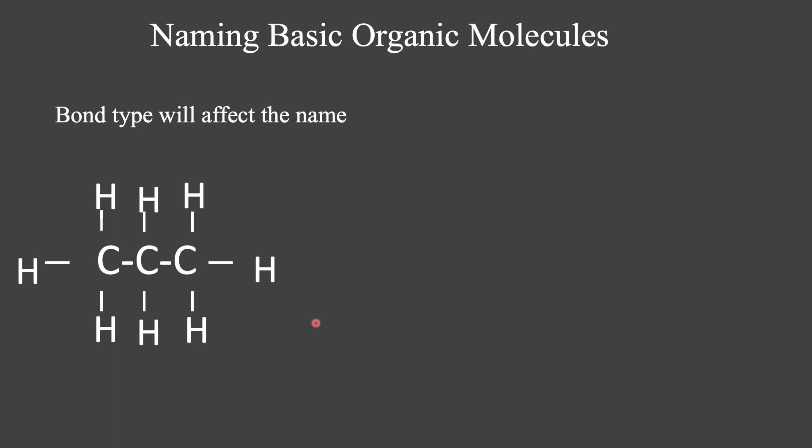So now we're going to talk about naming basic organic molecules. And one thing I want you to know is that the bond type will affect the name of the molecule. So far, what we've looked at is carbon singly bonded to a bunch of other elements, singly bonded to other carbons and singly bonded to hydrogens, as we can see here. This is called an alkane. When you have single bonds in between these carbons, this is an alkane. You're going to have to remember that.